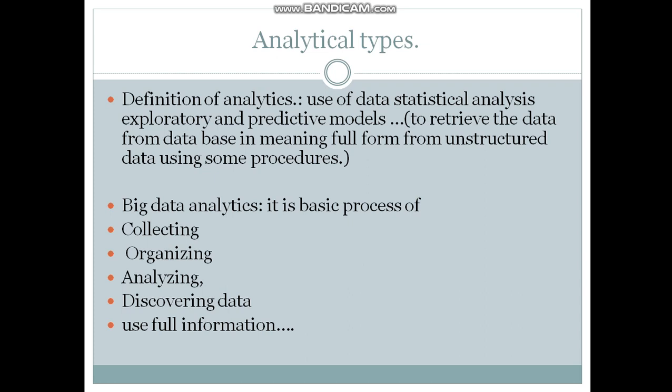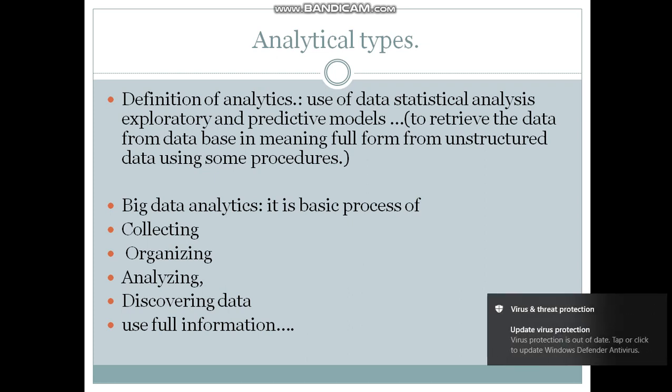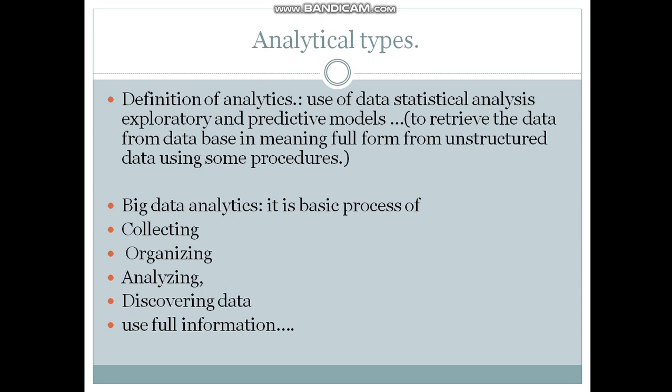Consider a small example: a university is conducting online exams in a COVID-19 situation. In that situation, we are conducting the exam in online mode. So what type of precautions and analysis do we first consider? How many students have laptops or smartphones? How many students have internet facilities? First, the university collects the data from all its related colleges. That process is called collecting and organizing — whatever data the university collects is stored in one place, and that is called organizing.